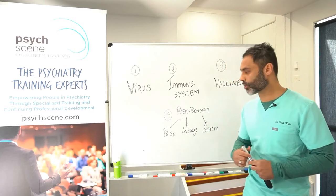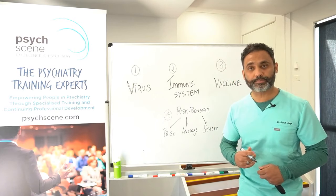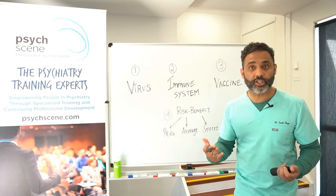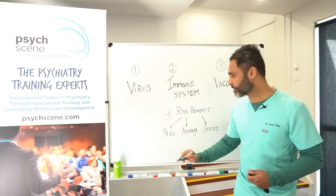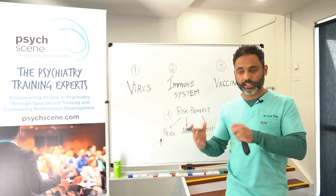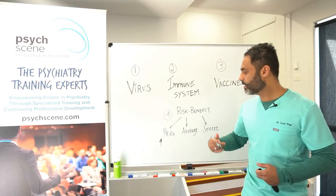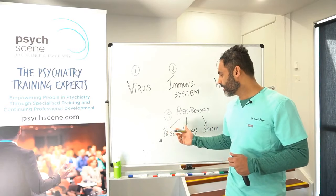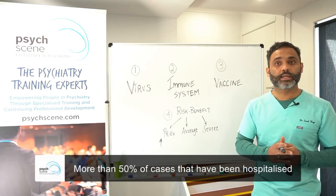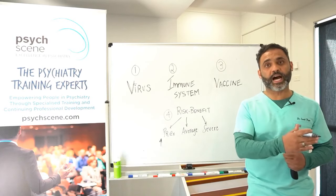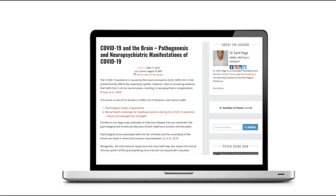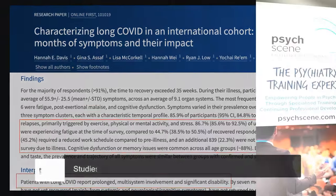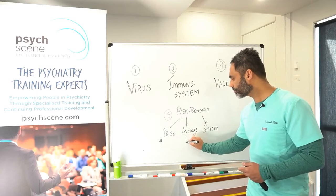Currently, the delta strain is extremely contagious, meaning the probability of exposure has gone up. In terms of average consequences, evidence shows that more than 50% of cases tend to have long COVID, which affects the brain and body and can result in chronic disability. That's a significant number to consider as an average consequence of exposure. The delta strain can also be more severe, particularly in younger individuals.